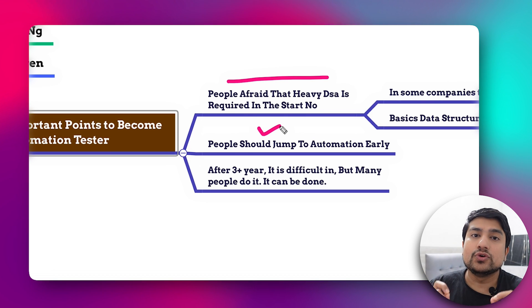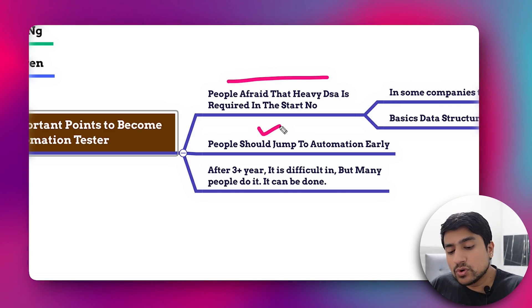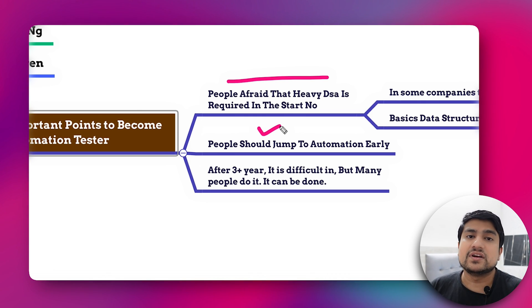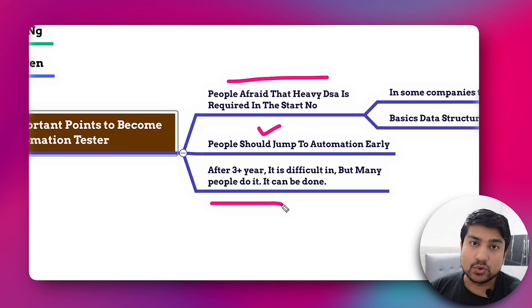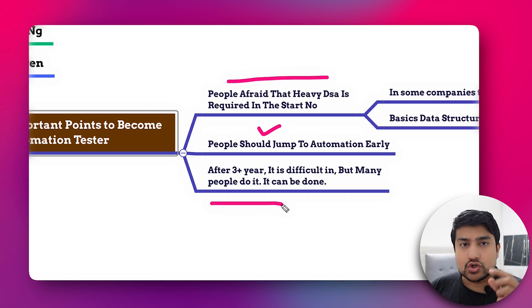Rarely will you use linked lists or other advanced concepts, but you should still be aware of them. The second important point: jump into automation early. If you have zero to one year of experience, it's a really good time because you have a fresh mindset and some programming background from your degree. The more you delay — after two, three, or four years — the harder it becomes. After three years, expectations for programming skills become very high.